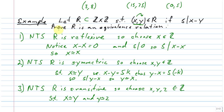We want to show this relation is an equivalence relation, so there are three parts. First, we show R is reflexive. We choose an element x of ℤ and show it is related to itself. We need x minus x to be divisible by five. Well, x minus x equals 0, and 0 is divisible by five because 5 × 0 = 0. So five divides x minus x, and thus x is related to x. The relation is reflexive.